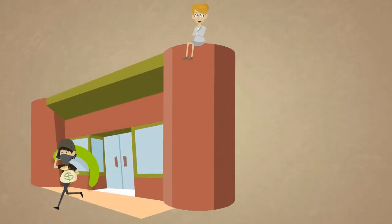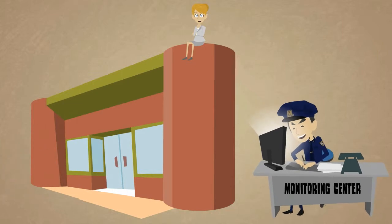As the robber leaves the bank, the tracker activates and sends a signal to the monitoring center and the police. This allows the police to track and capture the robber.